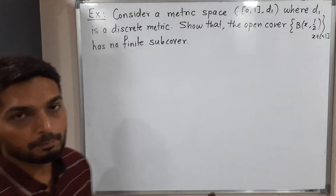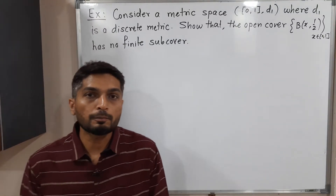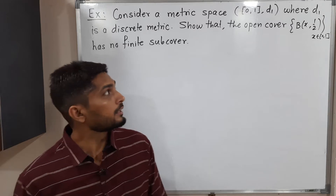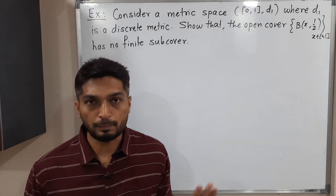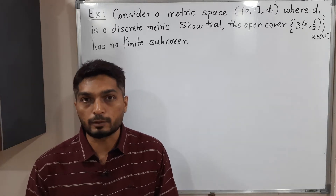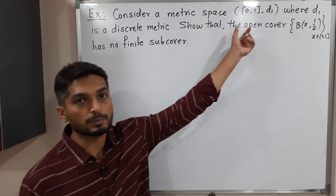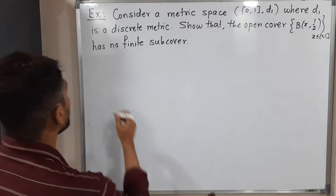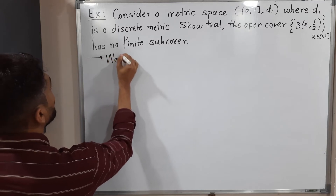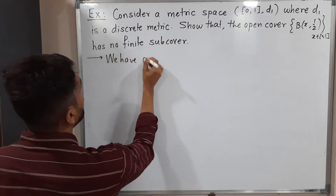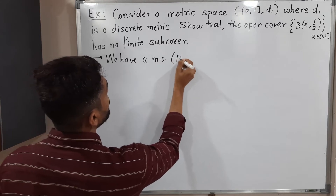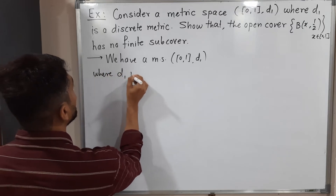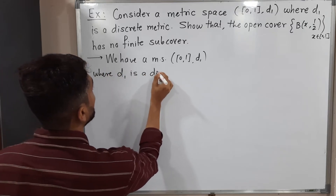Hi everyone, let us discuss this example. In this example, we have a metric space with a discrete metric and we have to prove that it is not compact by showing the given open cover has no finite sub-cover. We have a metric space — the closed interval [0,1] with D1, where D1 is a discrete metric.